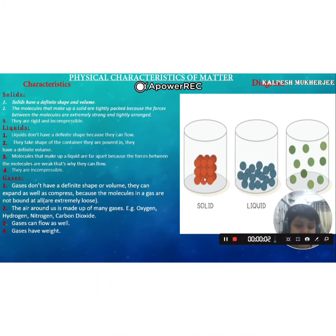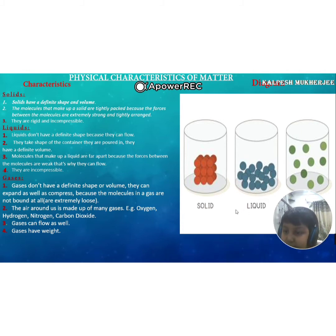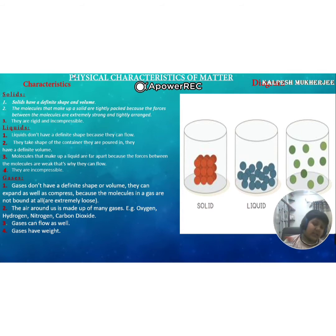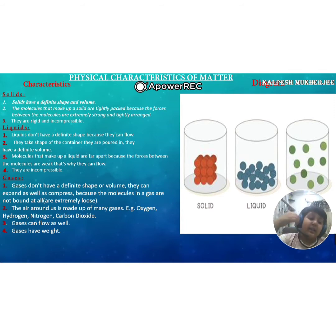For solids, you can see the molecules are clumped together — they are tightly arranged. But for liquids, the forces are weaker, so the molecules are farther apart. That's why when you move them, they can flow, because the molecules below come above and the ones above come below. Solids and liquids are incompressible, meaning their volume can't be changed, and they are inexpandable as well.